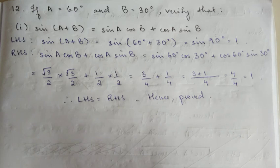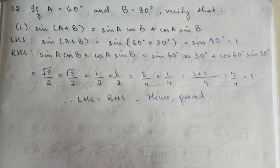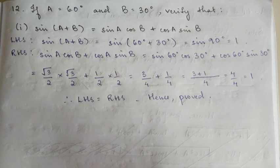Now right hand side: sinA multiply cosB plus cosA multiply sinB. Substitute: sin60 equals root 3 by 2, cos30 equals root 3 by 2, cos60 equals 1 by 2, sin30 equals 1 by 2. So RHS equals root 3 by 2 multiplied by root 3 by 2, plus 1 by 2 multiplied by 1 by 2.